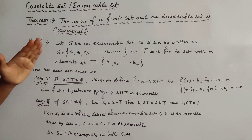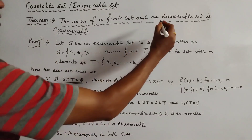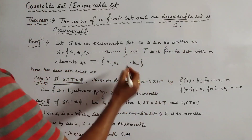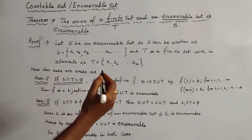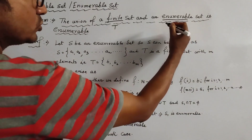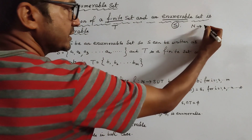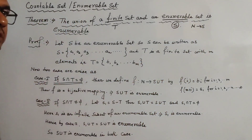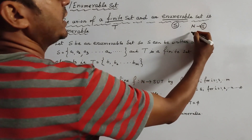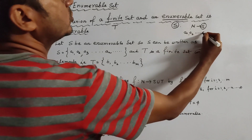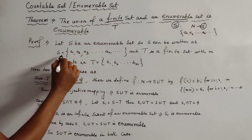We now give the proof of this theorem. We first let S be the enumerable set and T be the finite set. Since S is enumerable, there is a bijective mapping from ℕ to S. The elements of S can be written as A₁, A₂, A₃, ... and so on — this gives us the enumerable set S.